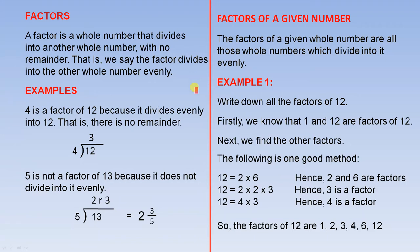Let's look at a few examples. 4 is a factor of 12 because it divides evenly into 12 — that is, there is no remainder. So 4 into 12 goes 3. 4 times 3 is 12. No remainder.